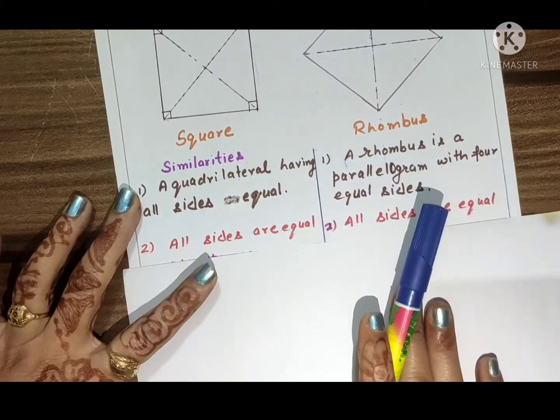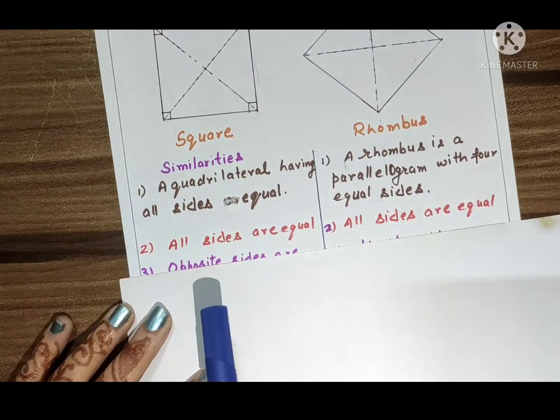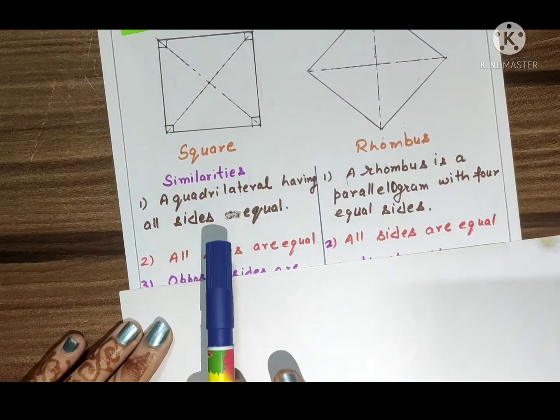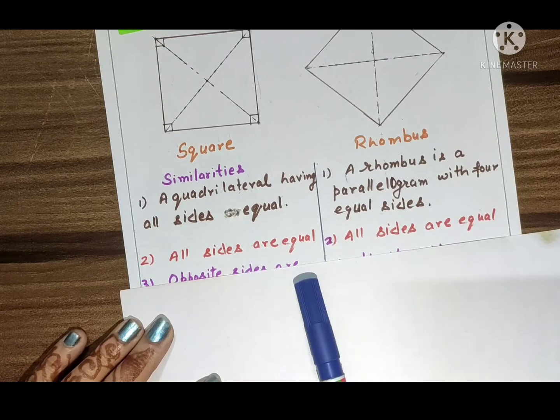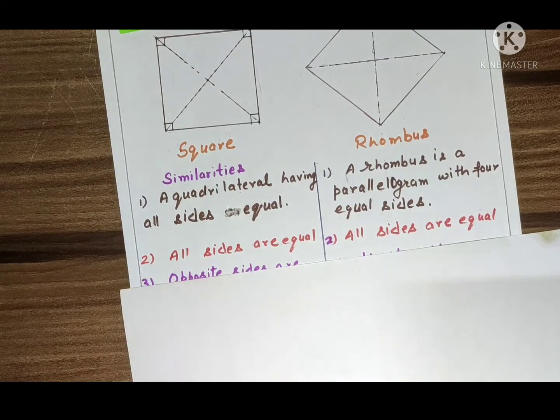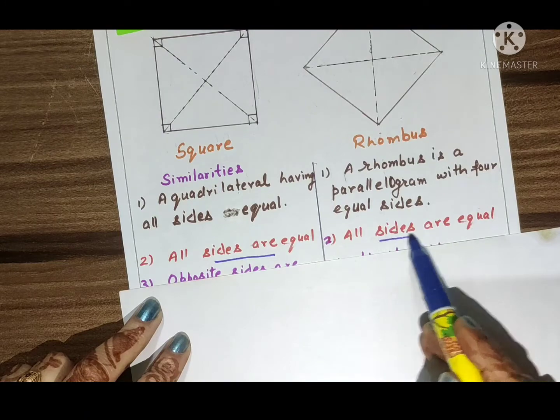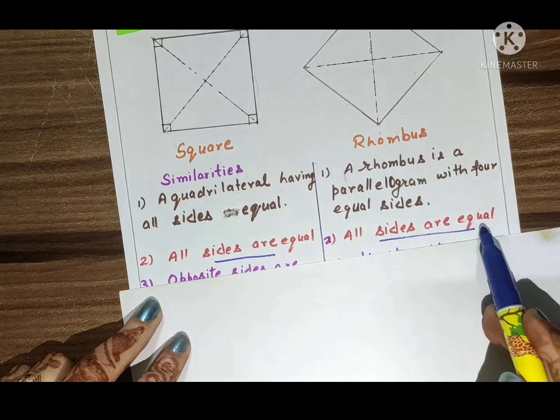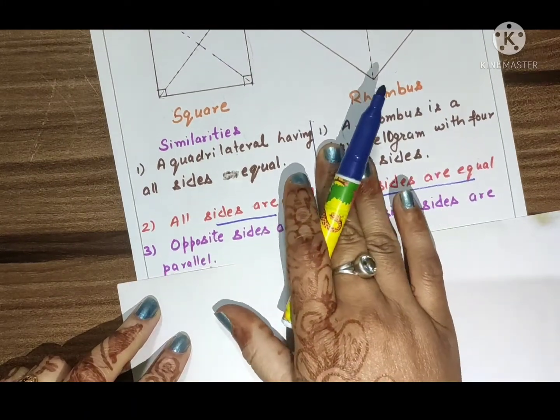Second point: in square, all sides are equal. In rhombus also, all sides are equal. Third point is opposite sides are parallel.